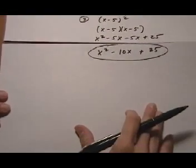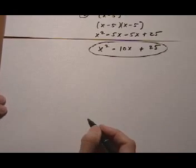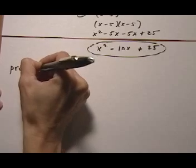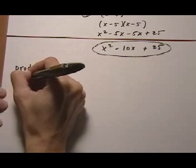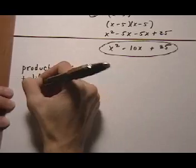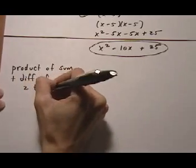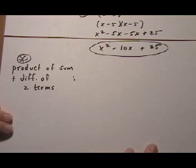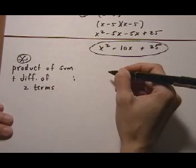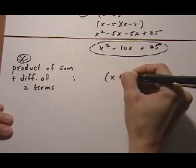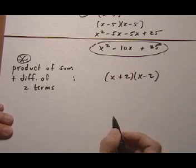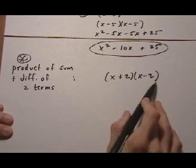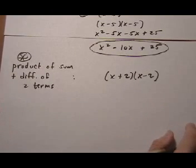The next thing is the product of the sum and difference of two terms. This is the one worth memorizing. Let's say we have (x + 2)(x - 2). We have the sum of two terms, x and 2, and the difference of two terms, multiplying together.